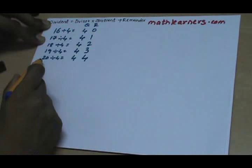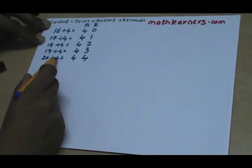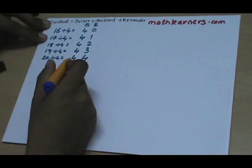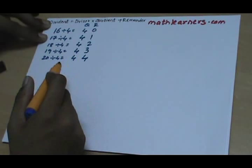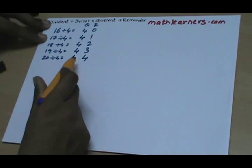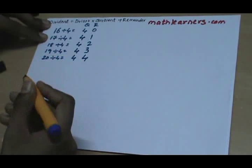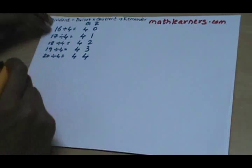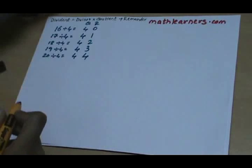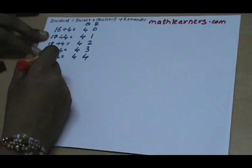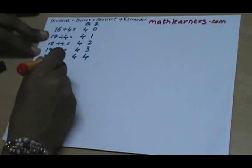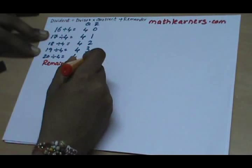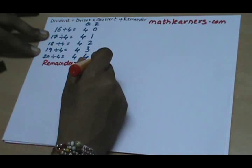But if you observe here, we had written 20 divided by 4, and we know that when 20 is divided by 4 we get quotient as 5 and remainder as 0. There is a difference between 5, 0 and 4, 4 — because we know a very important concept in mathematics that a remainder can never be greater than or equal to the divisor.